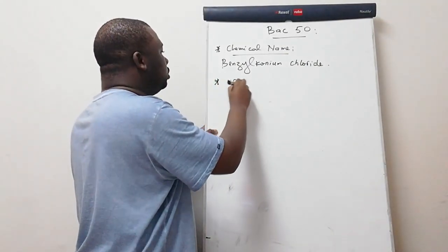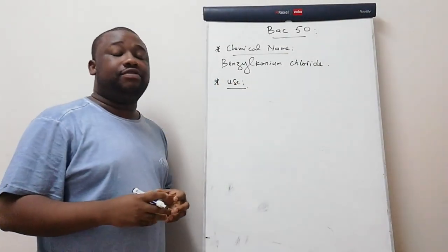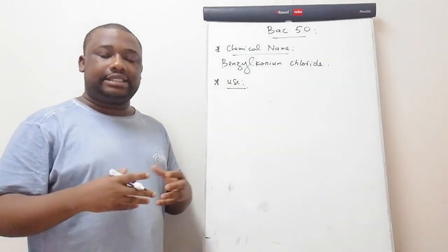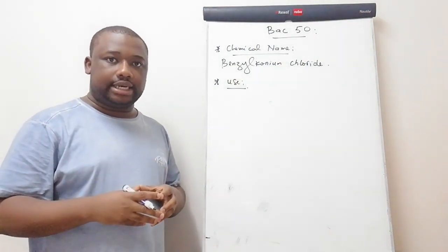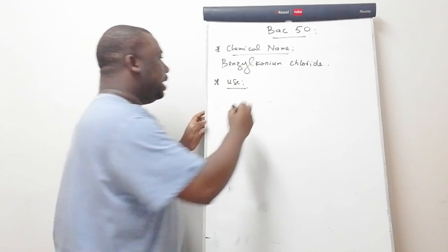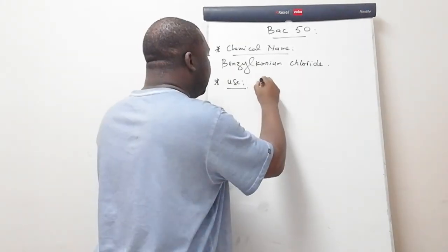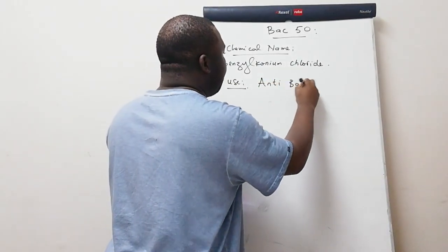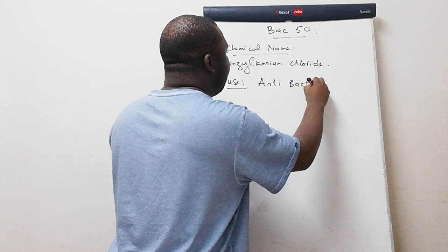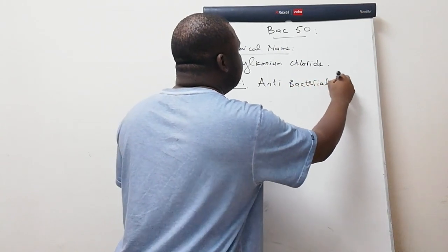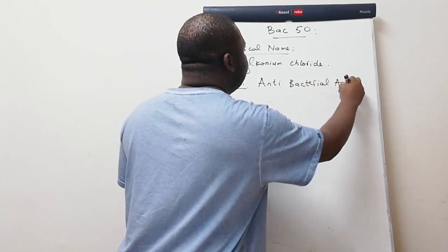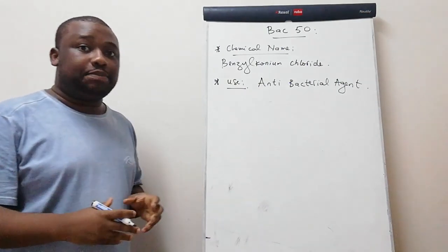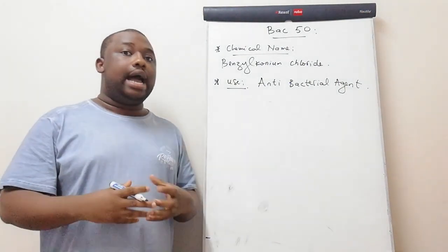Now let's get to the use. What is BAC 50 used for? You need to know that BAC 50 is used as an antibacterial agent. Let's write this down: antibacterial agent.